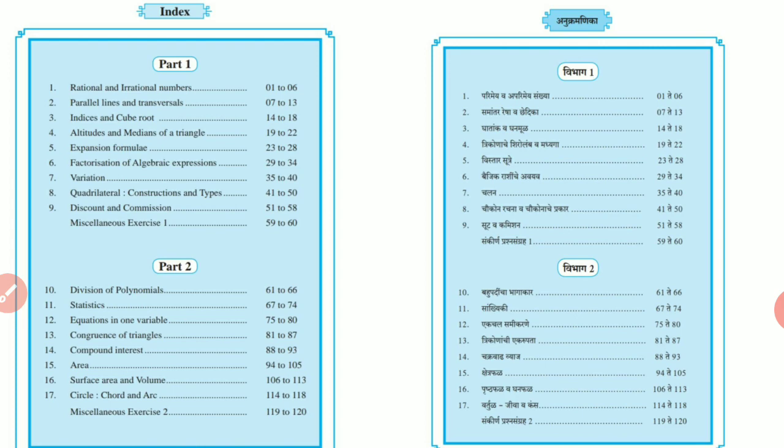In Part 1, total 9 lessons are given with 1 miscellaneous exercise. Part 2 belongs to the second term, which is given lesson number 10 to 17 with 1 miscellaneous exercise. This is the index of our Mathematics textbook.